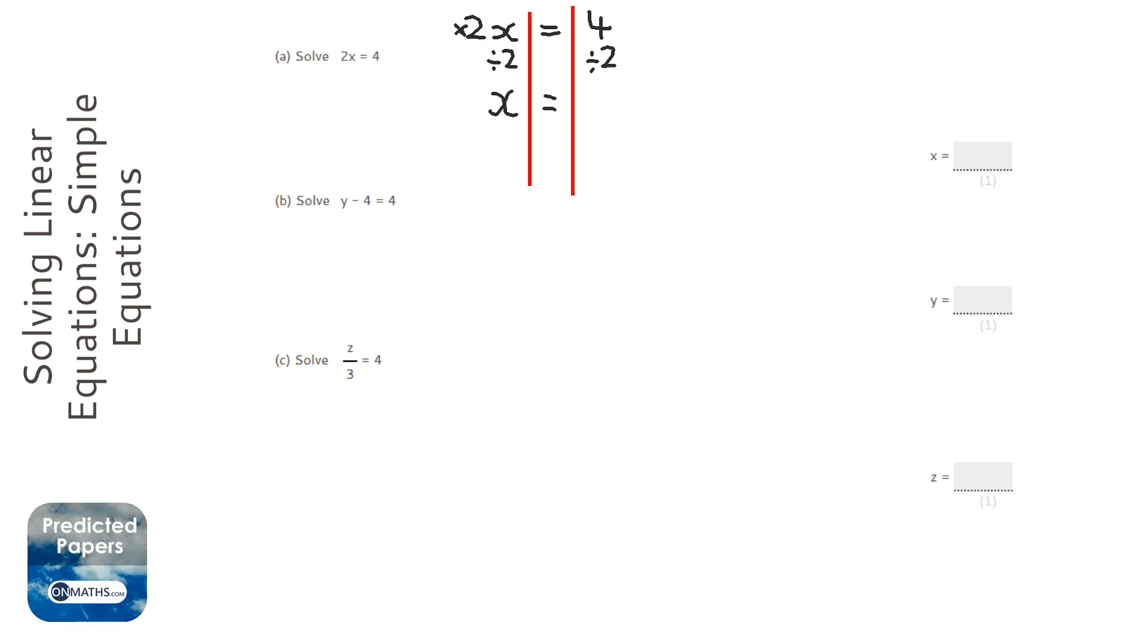I'm showing the examiner that I'm doing it on both sides. So we're left with x on this side, which is great—it's what we wanted because solve means to find out what x is. Four divided by two is two, so x equals two for that first one.